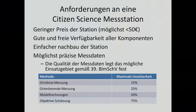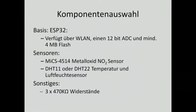Based on that, I formulated the requirements for a citizen science measurement station. It should be as cheap as possible, because nobody wants to spend tens of thousands of euros. The components should be widely available — usually they are only available for industrial players. It should be easy to build, and ideally as precise as possible, because you might want to present results to a government agency. Therefore we would like to stay within the framework of orientating measurements, with 25% uncertainty.